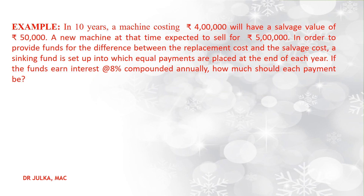For example, in 10 years a machine costing 4 lakh rupees will have a salvage value of Rs 50,000. A new machine at that time is expected to sell for Rs 5 lakh. In order to provide funds for the difference between the replacement cost and the salvage cost, a sinking fund is set up into which equal payments are placed at the end of each year. If the fund earns interest at a rate of 8% compounded annually, how much should each payment be?